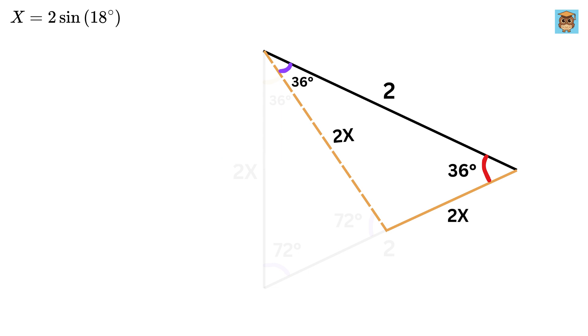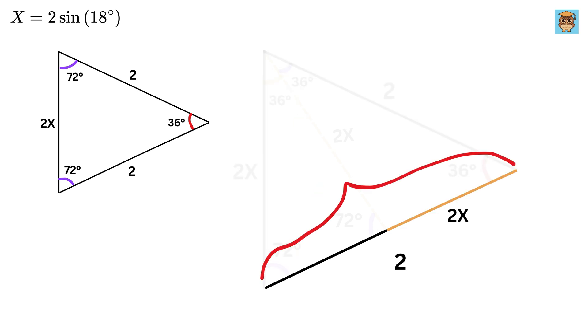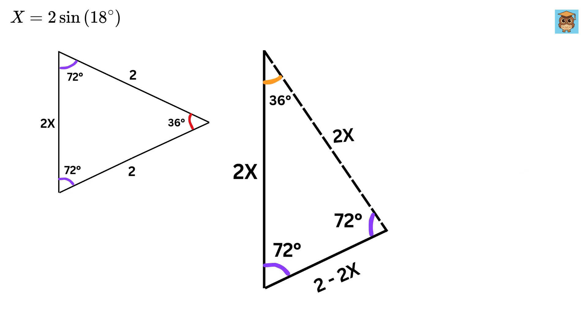And since this side is equal to 2x, therefore this side length will also be equal to 2x. Double nice! Now look at this part carefully. Look at this big triangle. This is 36 degrees and both these angles are 72 degrees. Now this is of length 2 and this is 2x, so this piece will be of length 2 minus 2x.